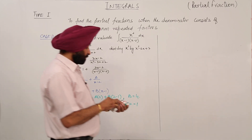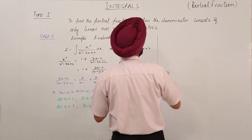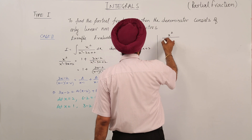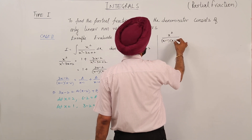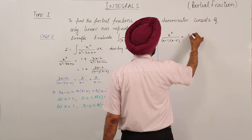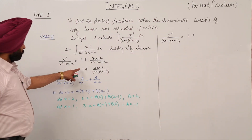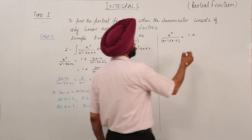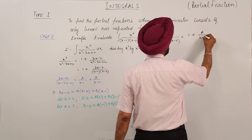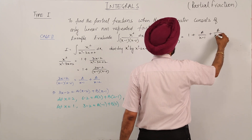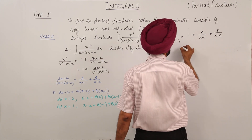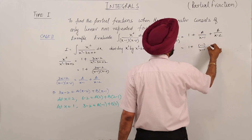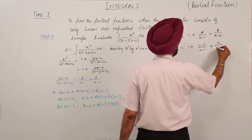Now the partial fraction decomposition for the question: x² divided by (x - 1)(x - 2) equals 1 plus A upon (x - 1) plus B upon (x - 2), which becomes 1 plus (-1) upon (x - 1) plus 4 upon (x - 2).